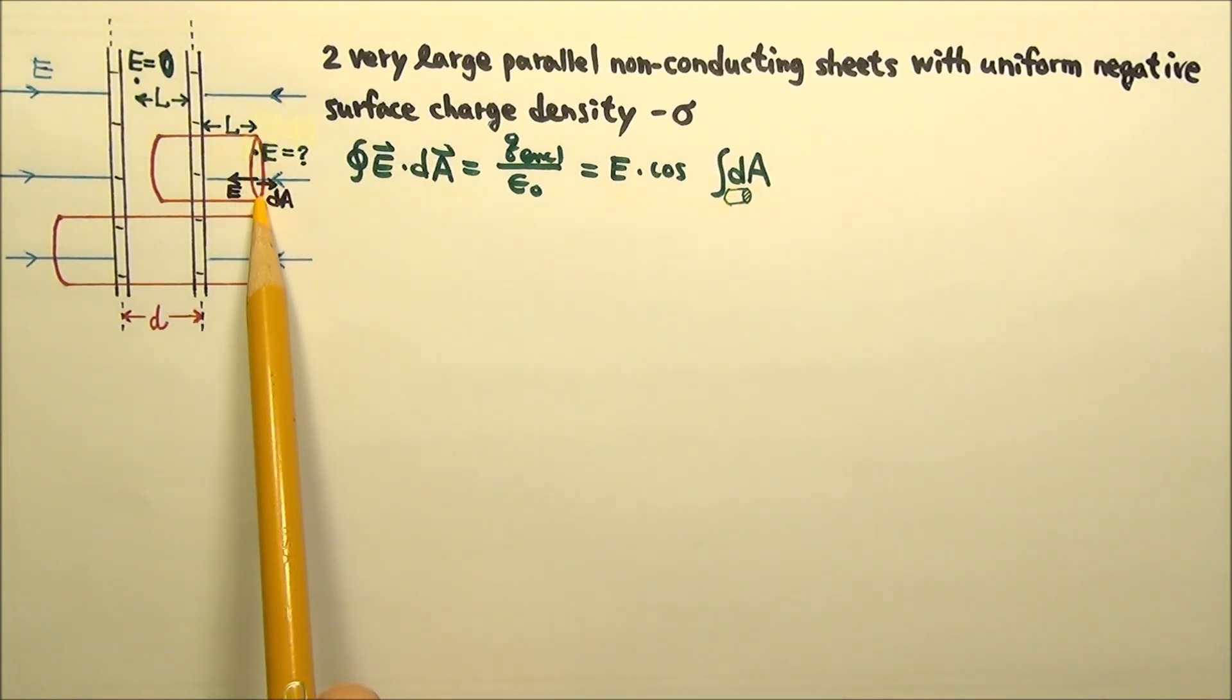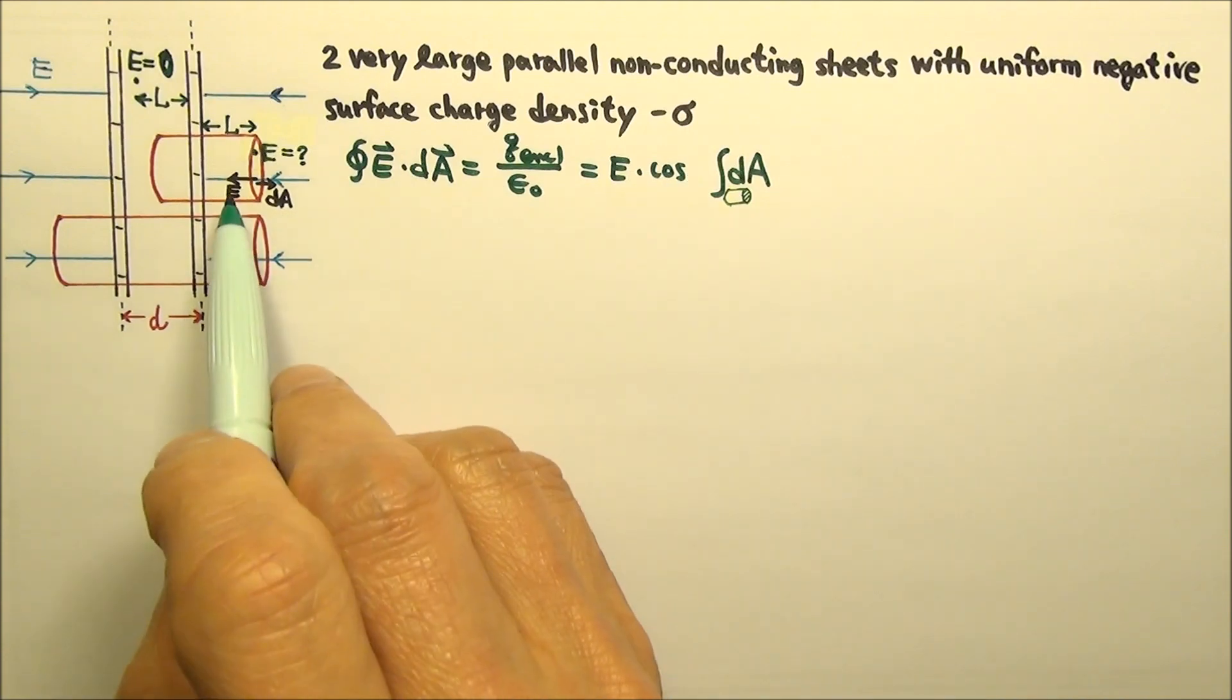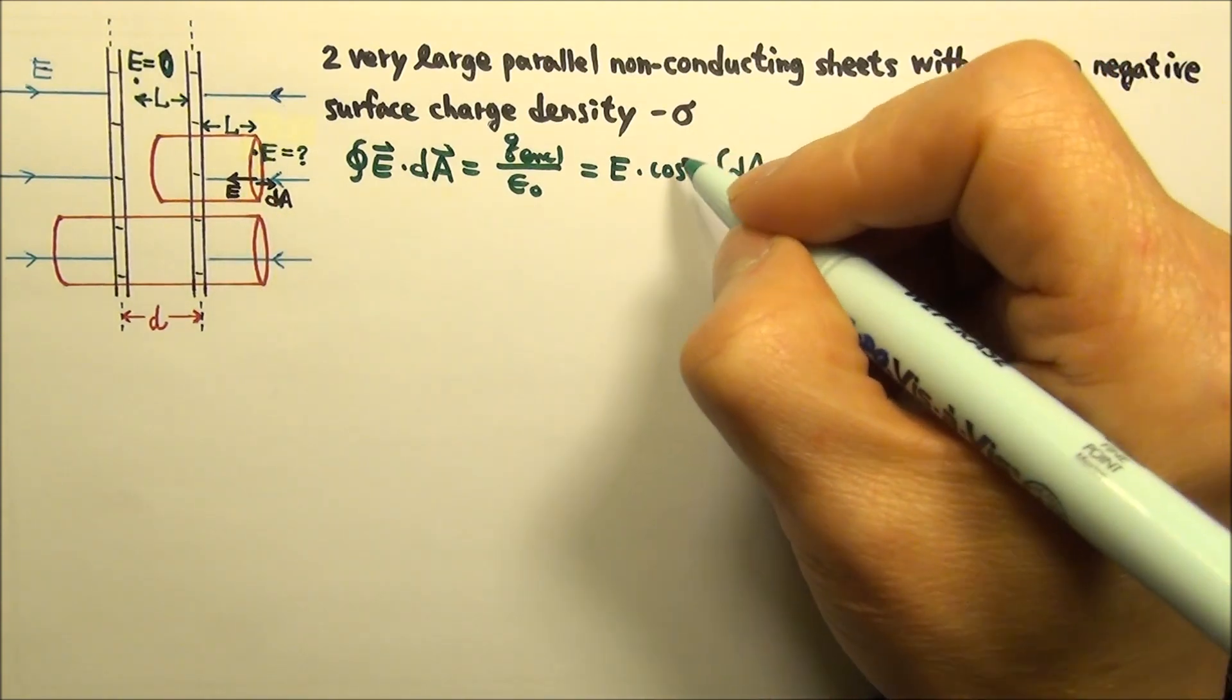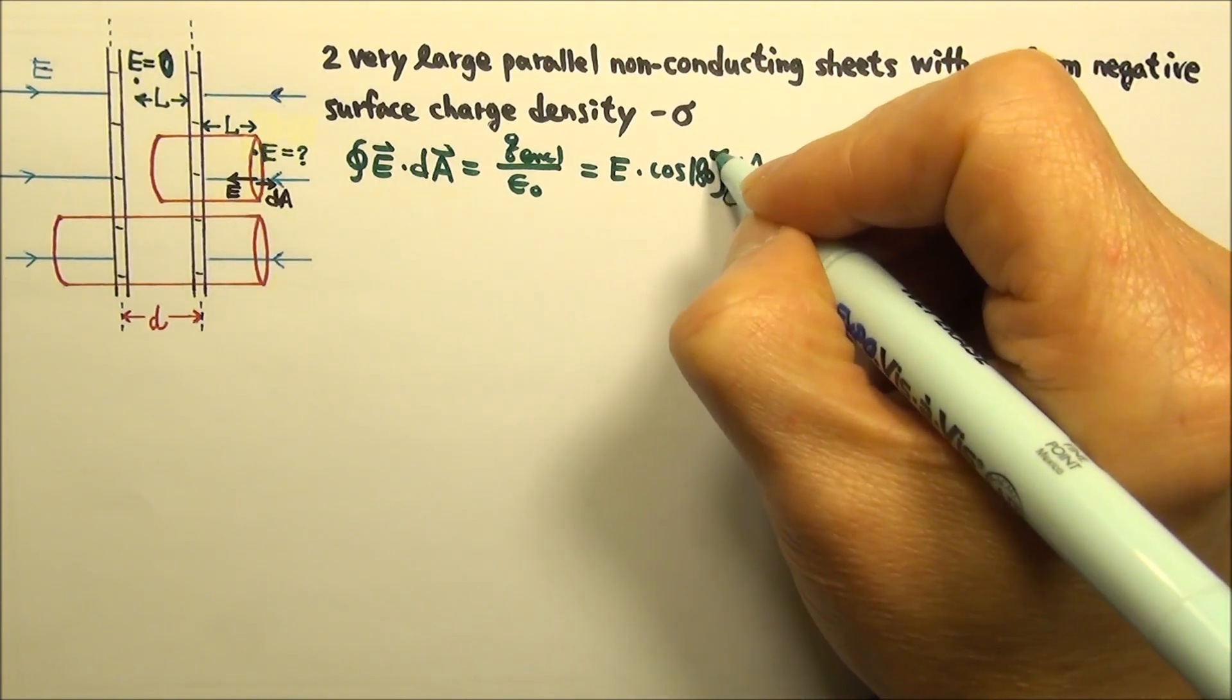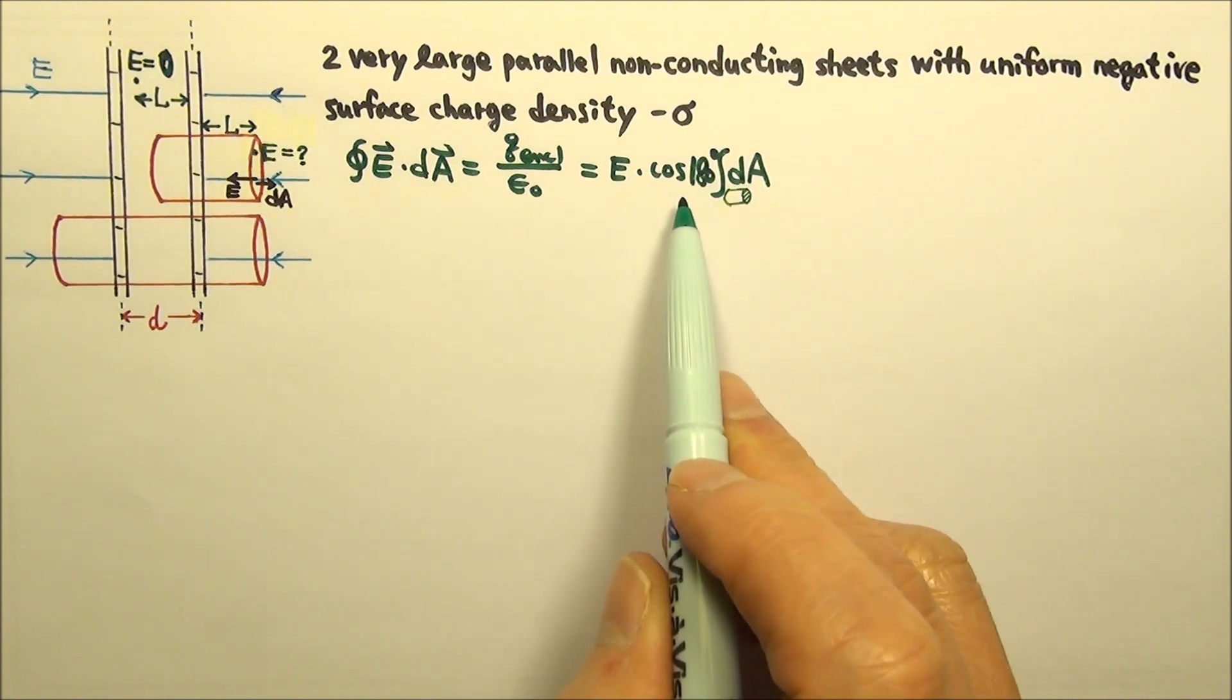Everywhere on the right end of the Gaussian surface, the electric field goes leftward into the negative charge, and the outward normal vector dA goes to the right. So the angle between e and dA is a constant 180 degrees, which can be taken out of the integral.